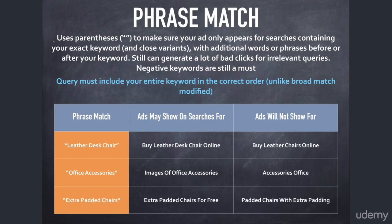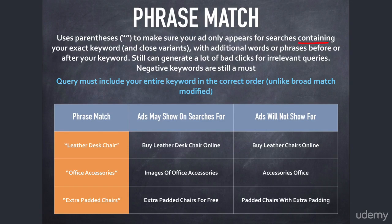Phrase match, like we saw right before, is a keyword enclosed in parentheses. So in order to activate phrase match, you need to know that the phrase or keyword needs to be in parentheses. We use parentheses to make sure your ad only appears for searches containing your exact keyword and close variants — with additional words or phrases before or after your keyword.